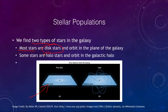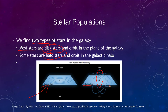However, there are also halo stars that orbit in the galactic halo. Instead of following the galactic plane as other stars do, these go in all sorts of directions and at all sorts of eccentricities.